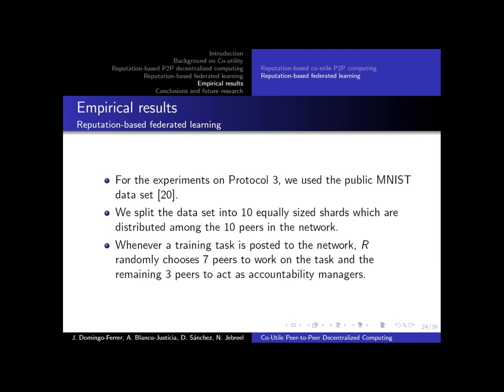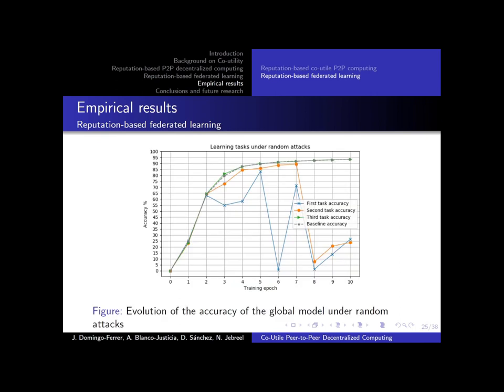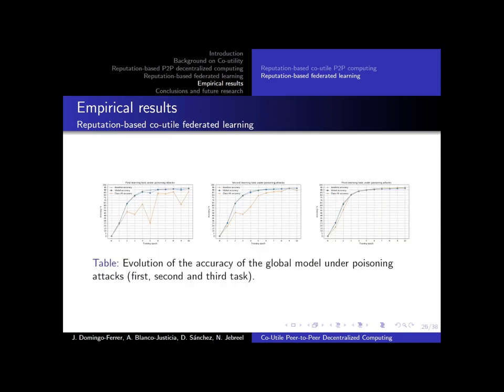We run these experiments for three rounds, each of them updating the reputations according to the behavior of the peers. For random attacks, in the first round, when we still don't have reputations, the model cannot converge, so the random attacks succeed. This also happens for the second round, but it takes a bit longer for the attackers to complete their objective. However, on the third round, when we already have the reputations for peers, the final accuracy for the learning task equals the baseline accuracy, which represents training a network with no attackers.